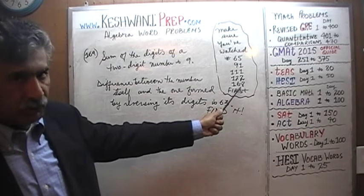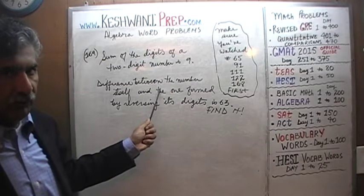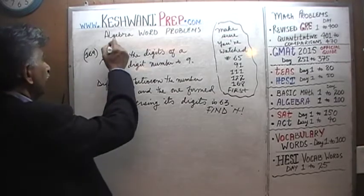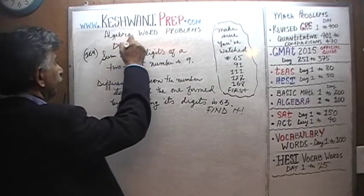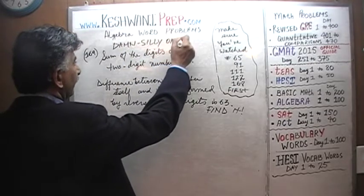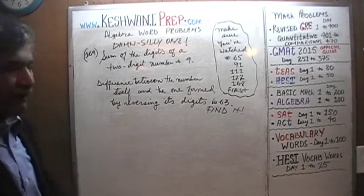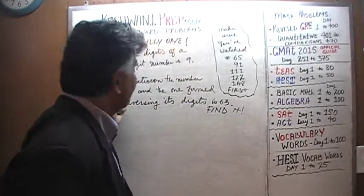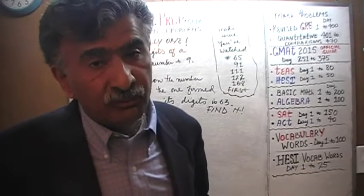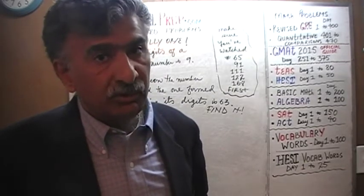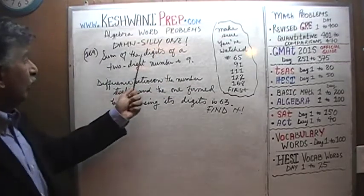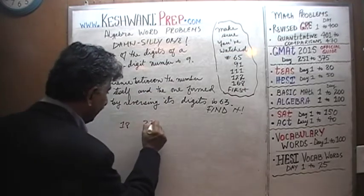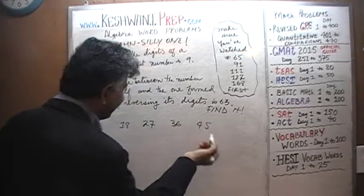If you watched problem one hundred sixty-eight, you will immediately recognize that this problem is what we call a 'damn silly one.' Why is it damn silly? Because nobody in their right mind will solve this algebraically. It's very simple — there aren't too many scenarios where the sum of the digits is nine: one-eight, two-seven, three-six, four-five. That's it — only four possible scenarios.